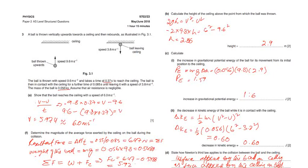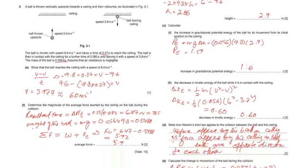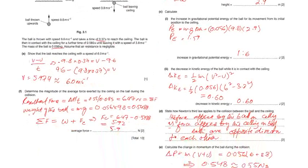Part two: the decrease in kinetic energy of the ball while it is in contact with the ceiling. Kinetic energy is decreasing, but when it is in contact, kinetic energy decreases due to loss in the collision.